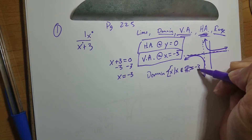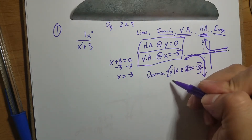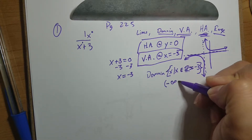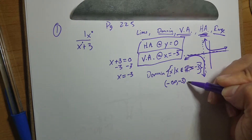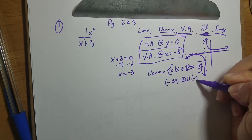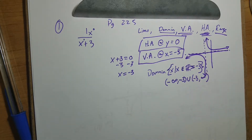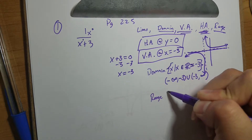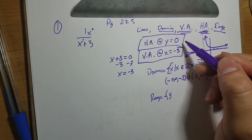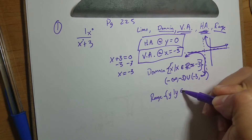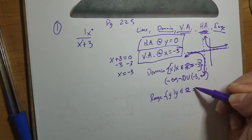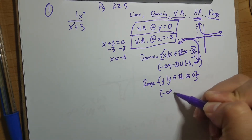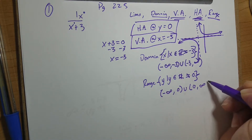We can write the domain in set notation as: the set of all x such that x is a real number and x is not equal to negative three. Or in interval notation: negative infinity to negative three, union negative three to positive infinity. For the range, we do the same thing but instead of negative three we use zero — so y such that y is all real numbers except zero, or in interval notation: negative infinity to zero, union zero to positive infinity.